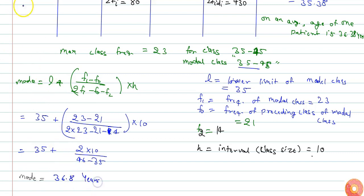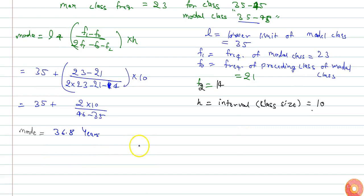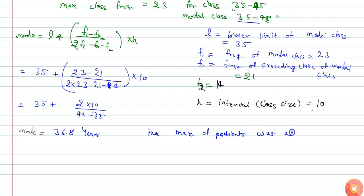So the mode is 36.8 years. The mode represents that the maximum number of patients had an age of 36.8 years.